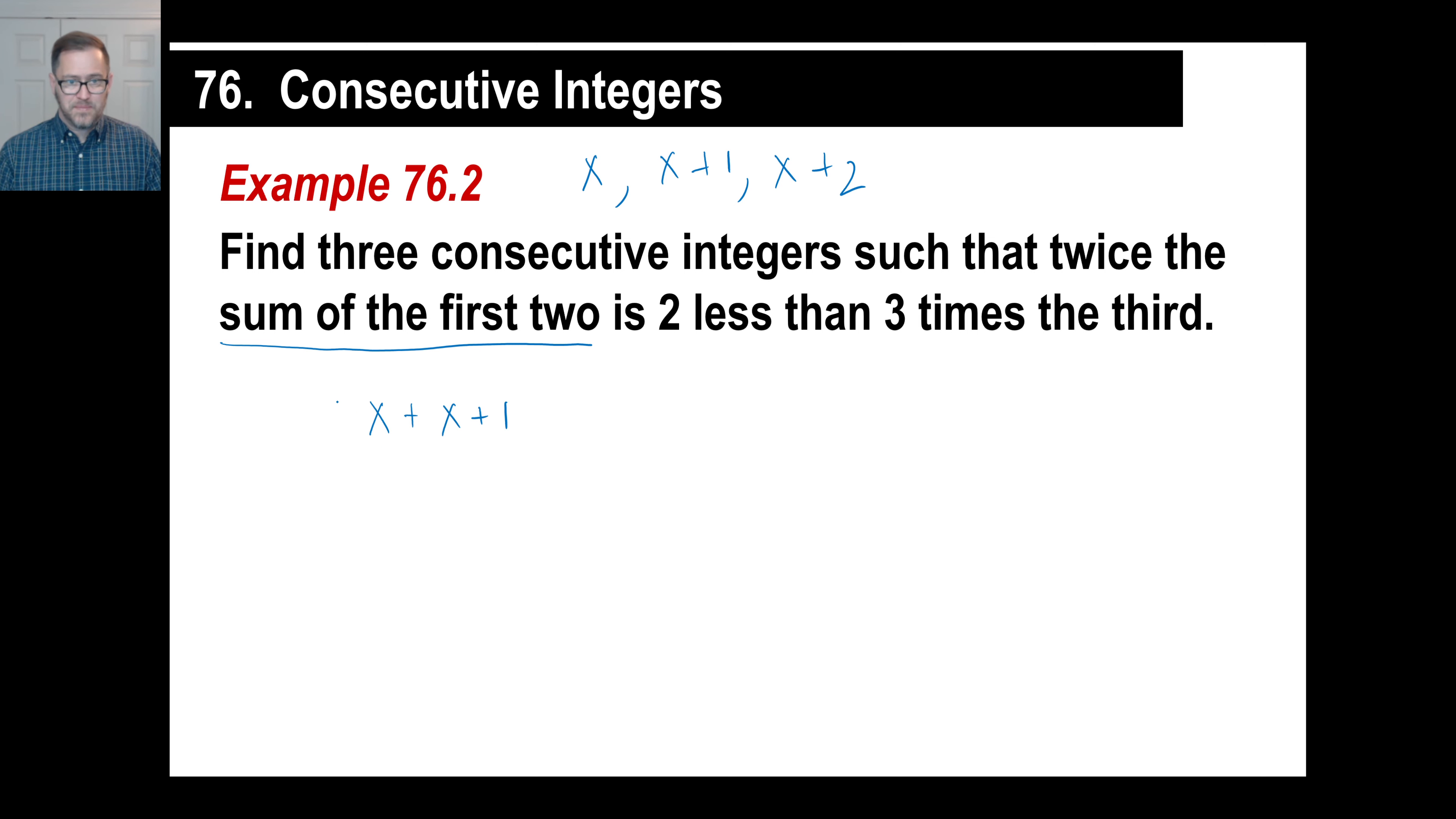So, this is 2 less than 3 times the third. Oh, boy. So, this part, if you were to put this on a little scale, this would be 2 less than 3 times the third, right? This part over here would be 2 less than. So, what do we need to do to this side to make it even to that side? We need to add 2, right? In other words, if we add 2 on here, it pushes this thing down and makes it even.